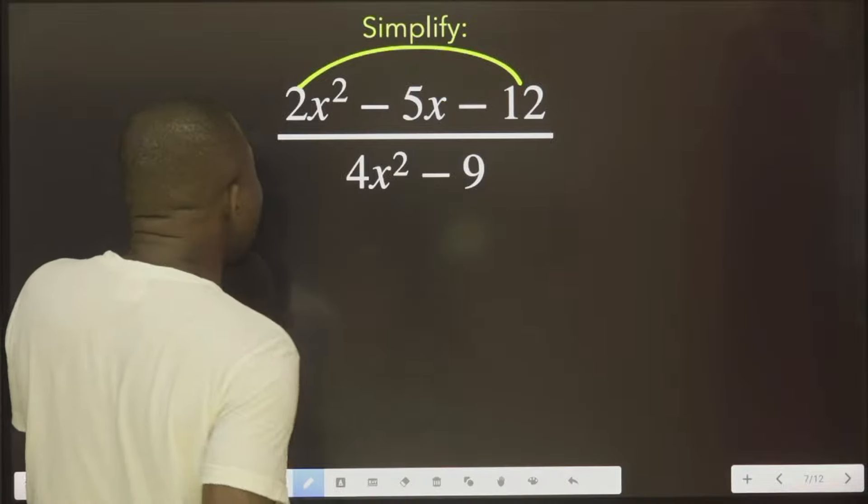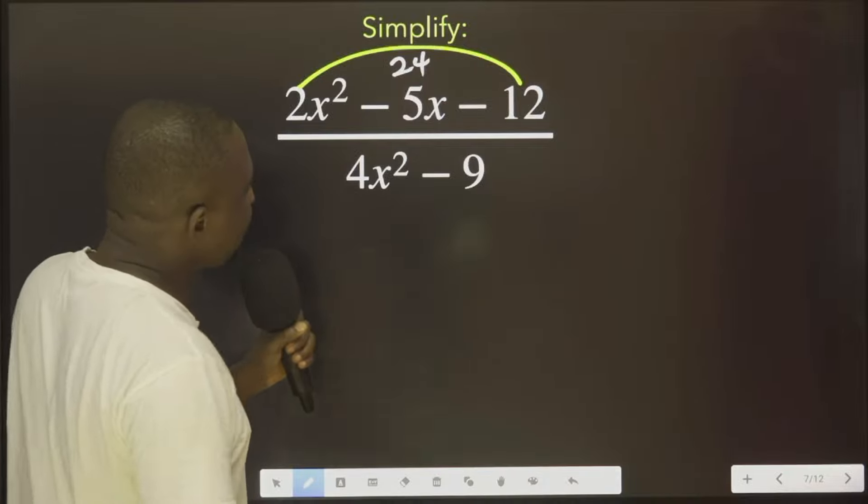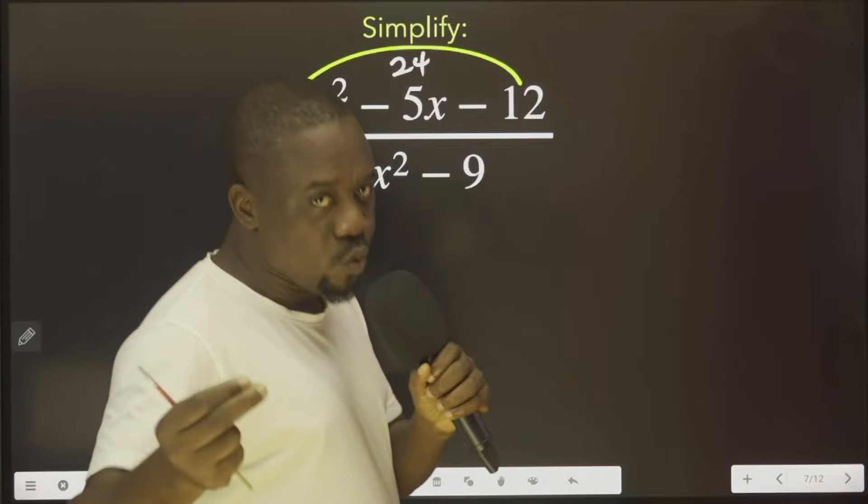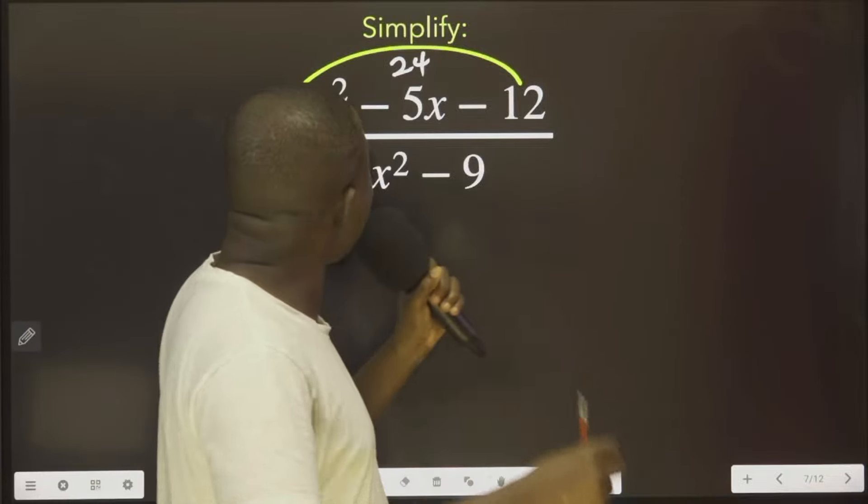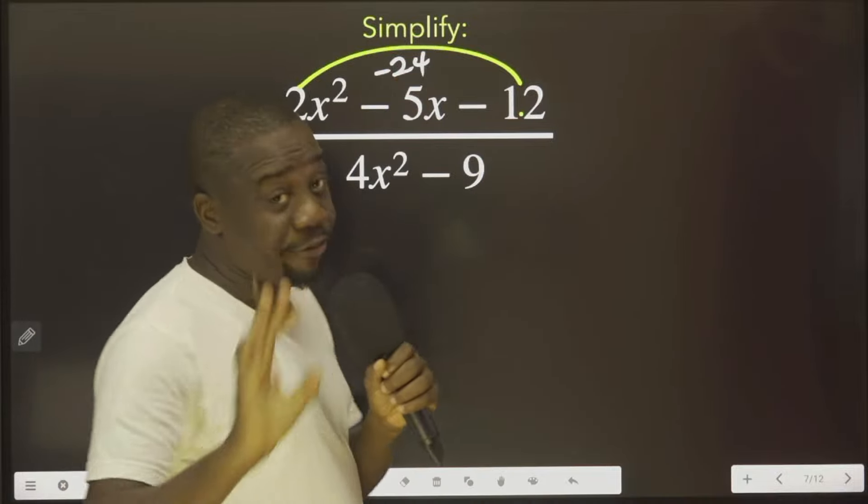First of all, you multiply this to have 24. You ask yourself, what are the two values? If I multiply them, remember this is minus 24 because 2 multiplied by this is minus 24.